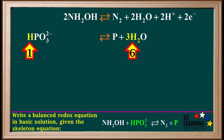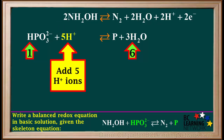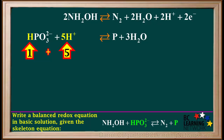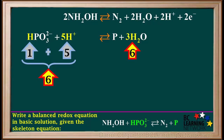Looking at hydrogen, we see we have one H atom on the left and six H atoms on the right. To balance Hs, we add five H+ ions to the left side. So now we have a total of 1 plus 5, which is equal to six H atoms on the left, and six H atoms on the right, so hydrogen is balanced.